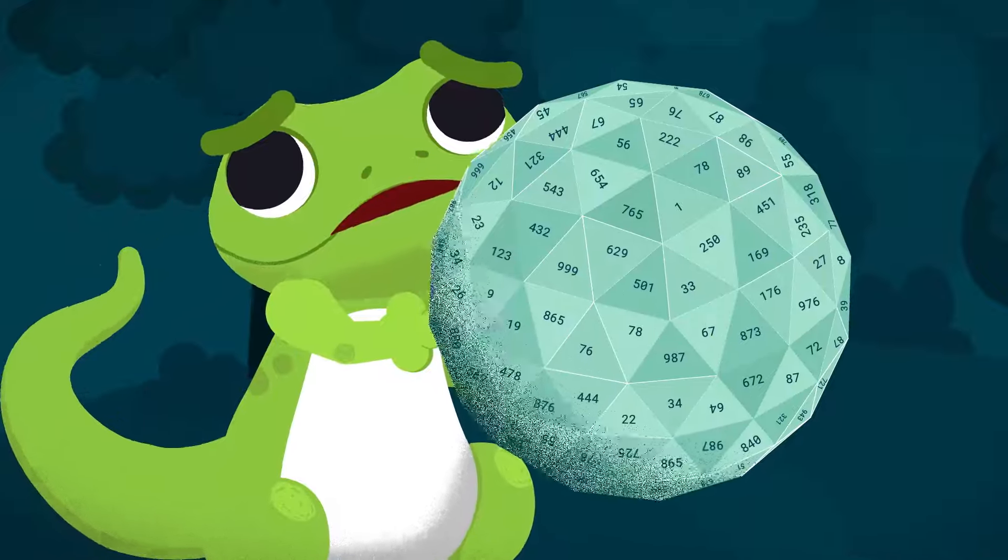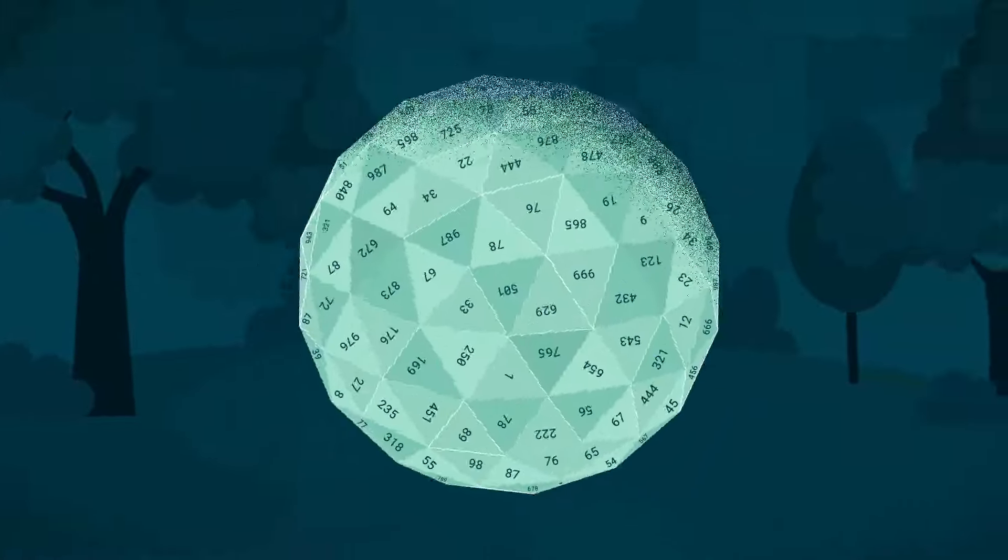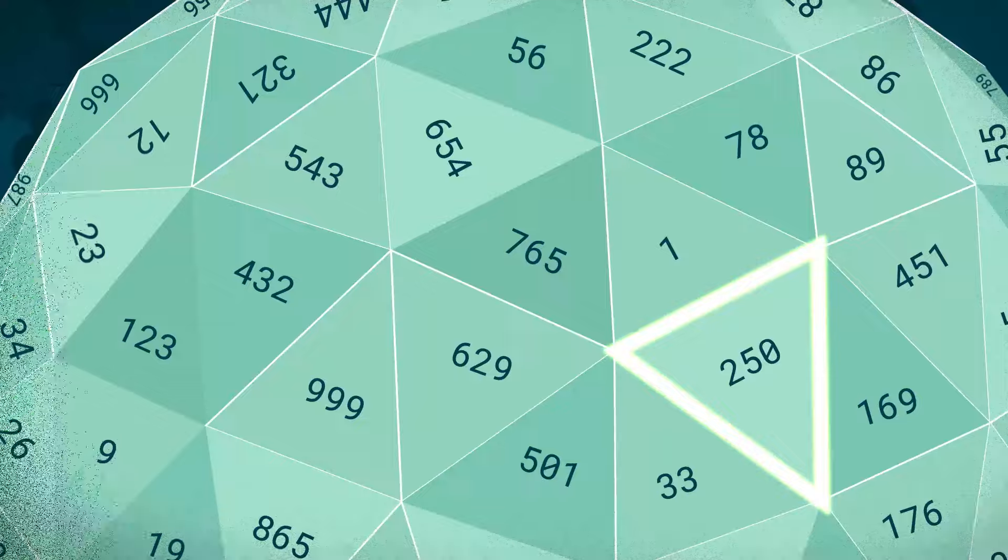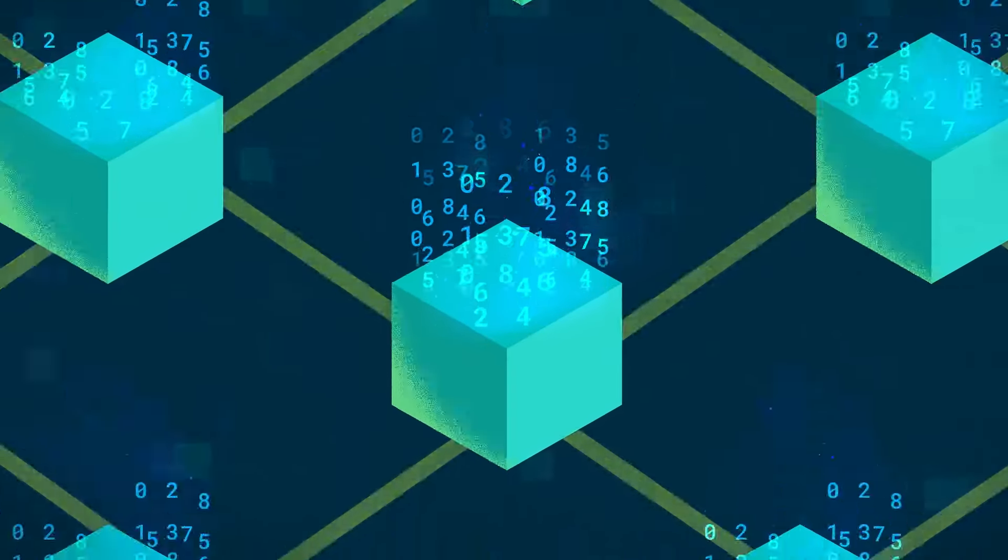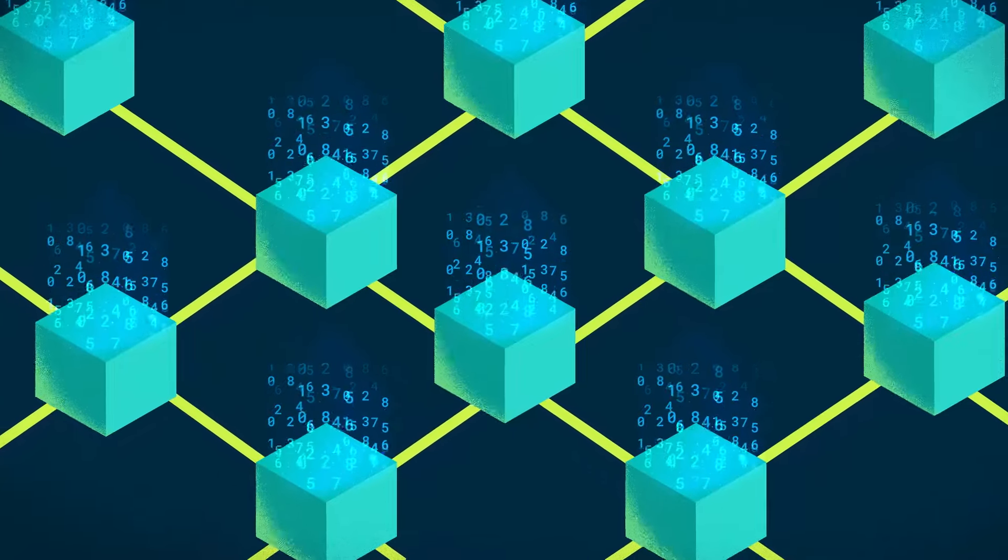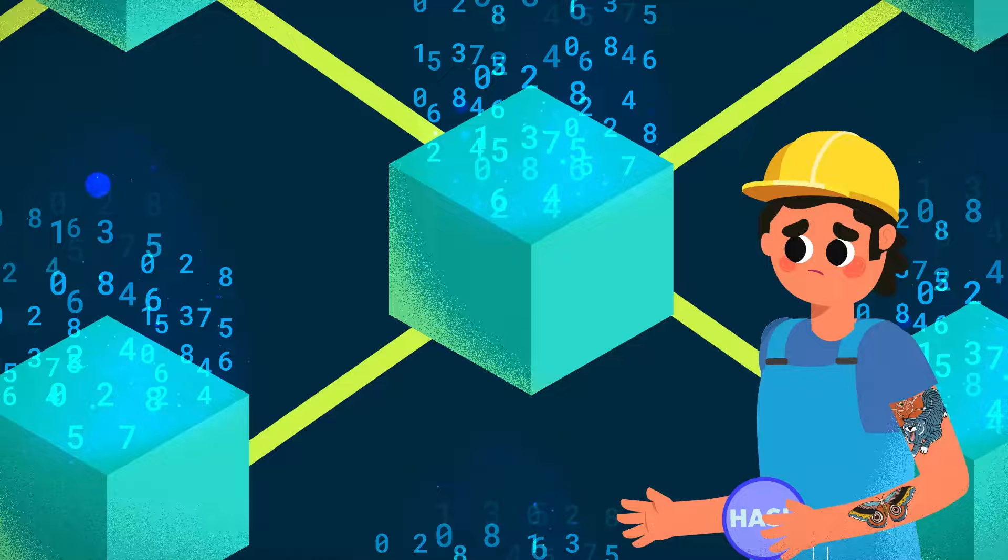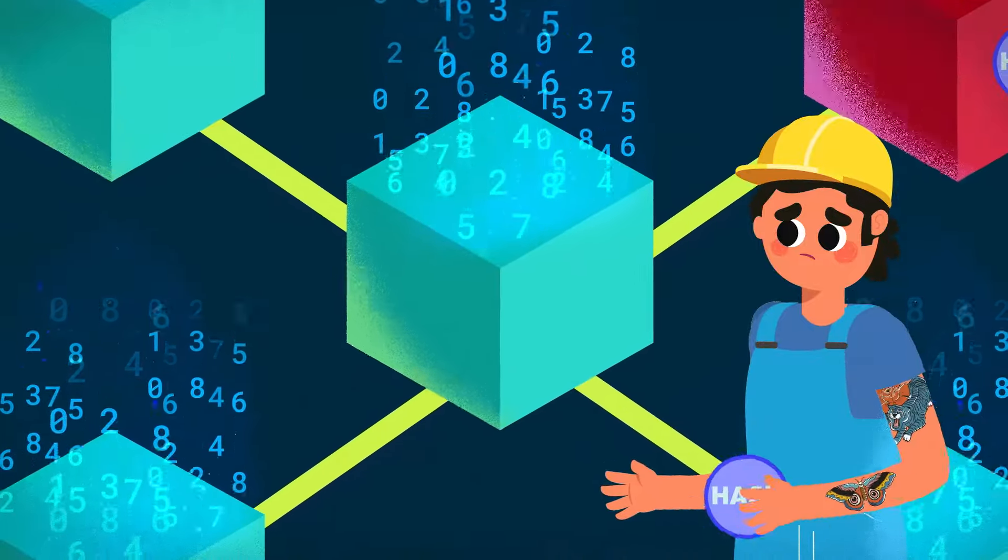That may sound counterintuitive, but imagine having to roll a 1000-sided dice. It would be more difficult to have to roll a number smaller than 10 than, say, 250. The target hash thus determines the Bitcoin network's difficulty. The higher the difficulty, the more guesses are needed on average for a miner to find the correct nonce.